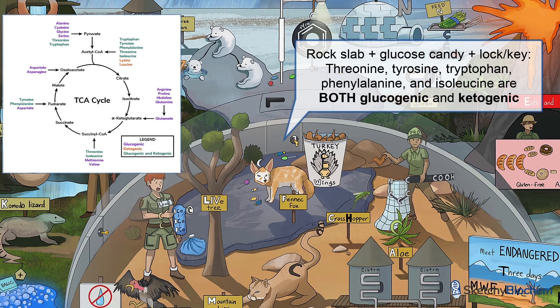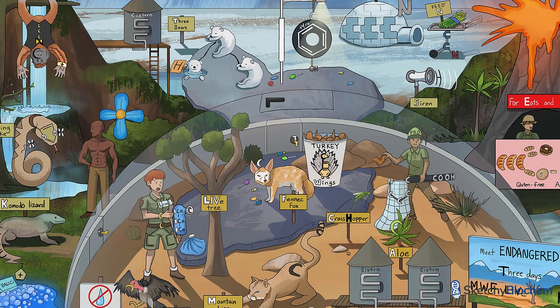See the giant rock slab underneath the three bears, tyroswing, turkey wings, fennec fox, and ice pack? The rock slab contains glucose candy, and there's a lock and key where zookeepers can leave or enter the tundra from the desert area. The glucose candy and lock and key will help you remember that these amino acids are both glucogenic and ketogenic. If you can remember the two strictly ketogenic amino acids and the five glucogenic/ketogenic ones, then you already know which amino acids are exclusively glucogenic — the remaining 13.